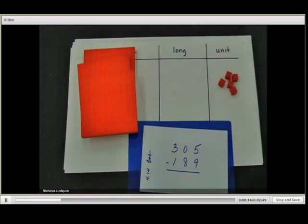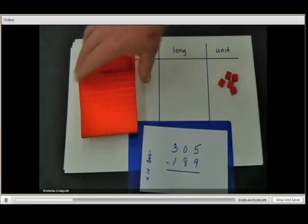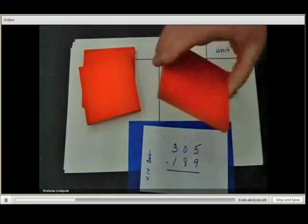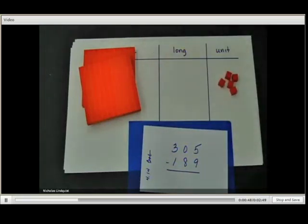Now, to subtract 189 looks like we're going to have to do some trading. Okay, let's get some more blocks. We are going to first take one of these flats and we're going to trade it in for 10 longs.